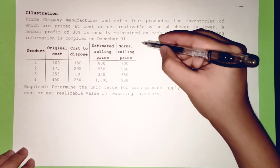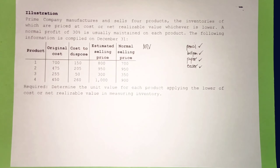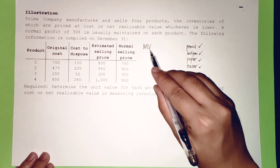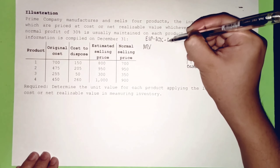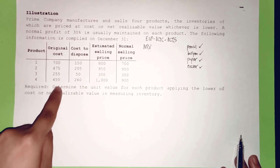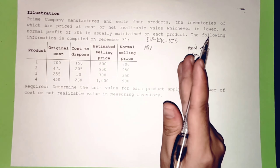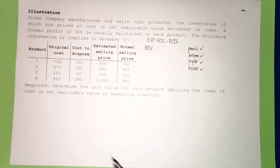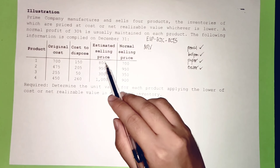We will use that item-by-item procedure here to determine the NRV of each inventory item of Prime Company. NRV = Estimated Selling Price − Estimated Cost to Complete − Estimated Cost to Sell. For Product 1: estimated selling price = ₱800, cost to dispose (cost to sell) = ₱150. NRV = ₱800 − ₱150 = ₱650.